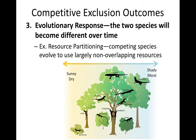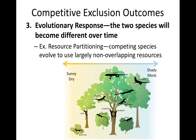The third thing that can happen when competition occurs is an evolutionary response where the two species will physically change — they will evolve over time. An example of this happened in Puerto Rico with these lizard species. They were in competition with each other, so over time they evolved to be very different from each other. You can see their bodies and sizes are different, allowing them to have different niches and different roles. This is called resource partitioning, where competing species evolve to use non-overlapping resources — different parts of the tree, shrubs, or different species of trees — so they're not in direct competition and each has its own unique niche.